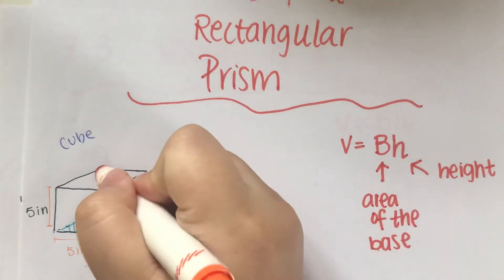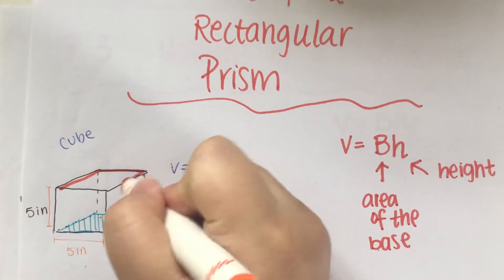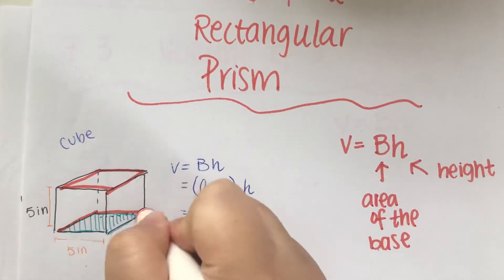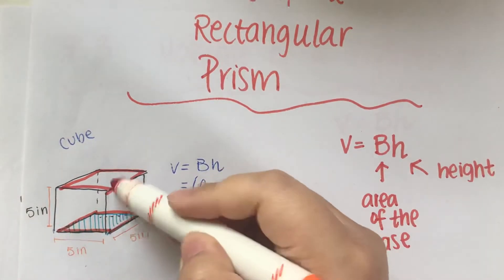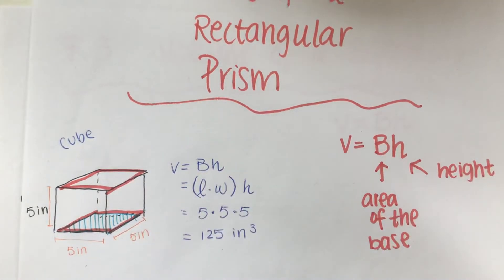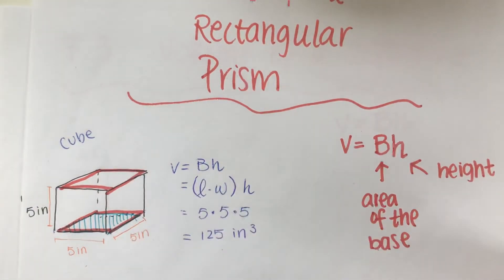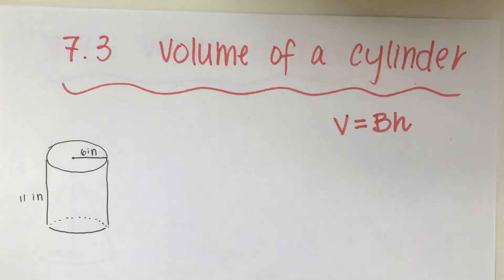Now why is a cylinder a prism? Prism meaning that the top has the same shape as the bottom. Both of them are called bases. So one is on the top, one is on the bottom.